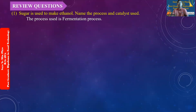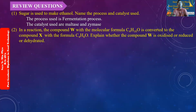This is the formation process. The compound W has the molecular formula C4H8O3. The formula C4H8O3 is confirmed, and we can explain the bonding in this compound. It involves hydrogen bonding and does not form an oxide.